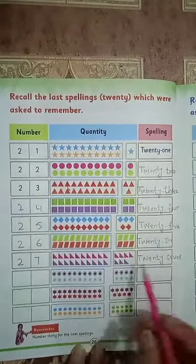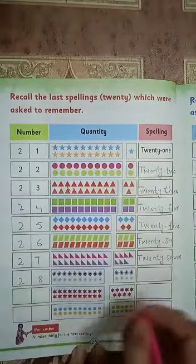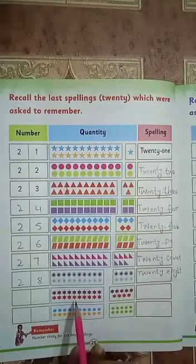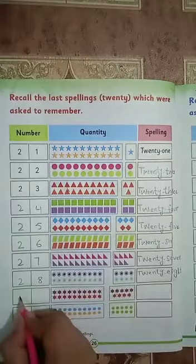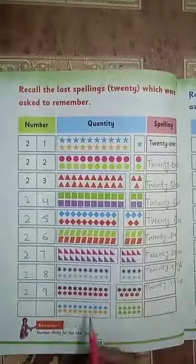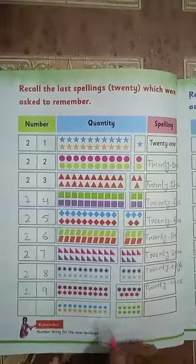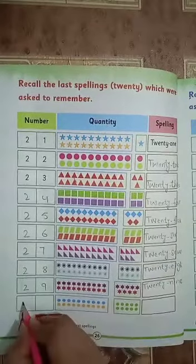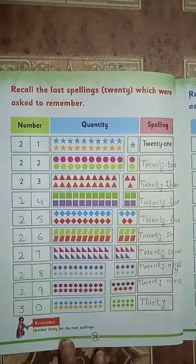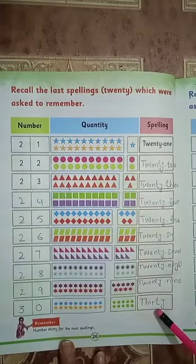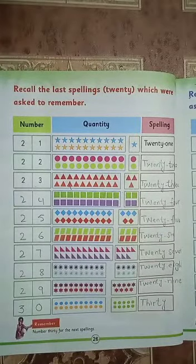Next take it. Twenty, one, two, three, four, five, six, seven, eight. Twenty-eight. Twenty-eight. Next take it twenty. One, two, three, four, five, six, seven, eight, nine. Twenty-nine. Twenty-nine. The last one is 20 and 1, 2, 3, 4, 5, 6, 7, 8, 9, 10. Twenty and ten, it makes 30. Three, zero, 30. Now we will write the spelling. 30. Okay, we have done page 25 and 26. We will continue from page 27 in the next class. Thank you. Stay home, stay safe. Allah Hafiz.